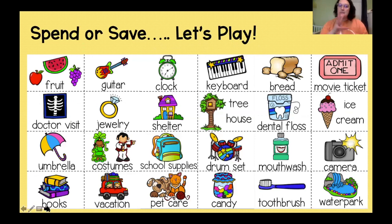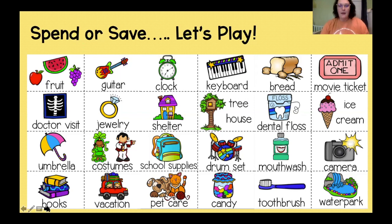Now that we've talked about spend or save, we're going to play a little game together. You may recognize some of these pictures from your packet. We're going to decide if we're going to spend it or save for it. If we're going to spend money on something because it's a need, we can spend. But if it's a want — something we'd really like to have — we probably should save for it. If it's a spend, we'll give it a circle; if it's a save, we'll give it a check mark.